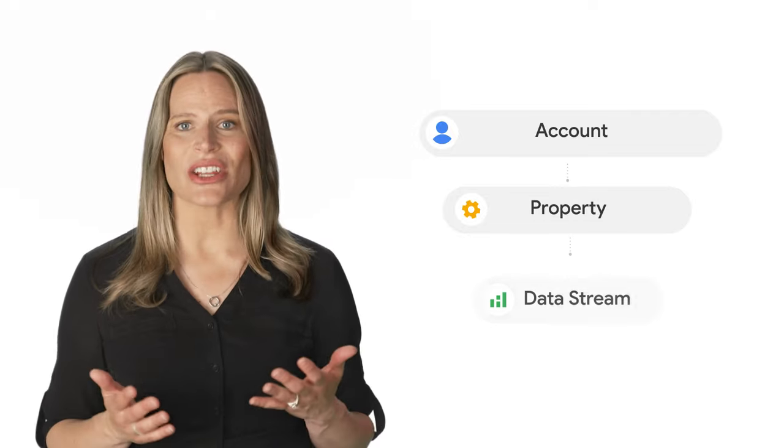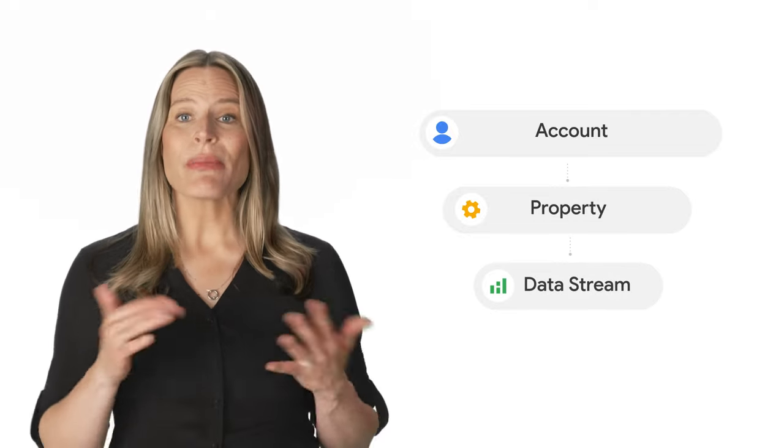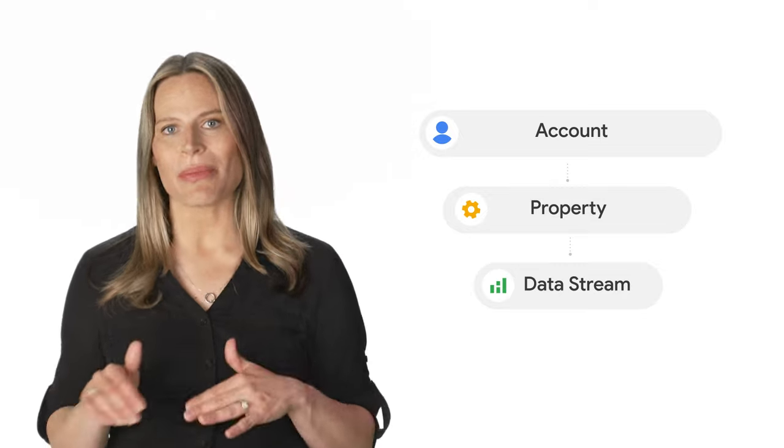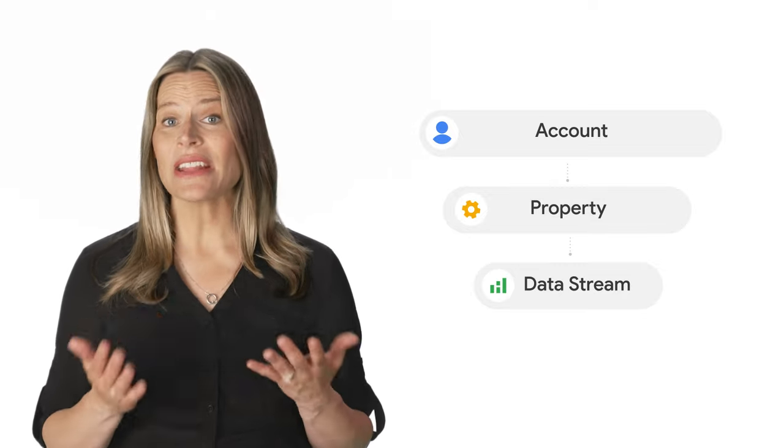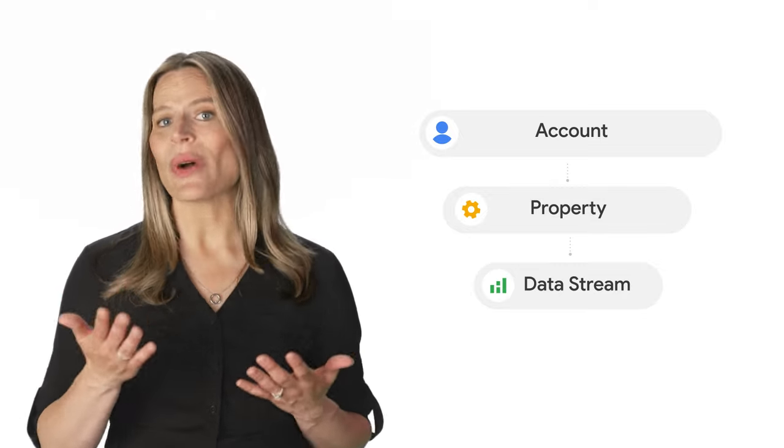Underneath each property is a data stream that represents the flow of data from a website or an app to the property, and the level where you can control things like what data gets collected. There are web data streams for websites and app data streams for mobile apps.